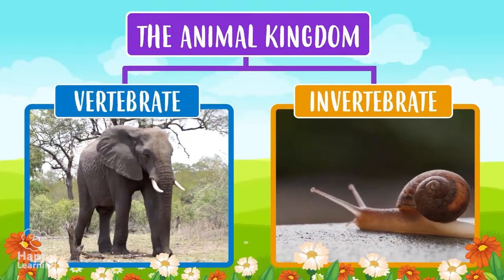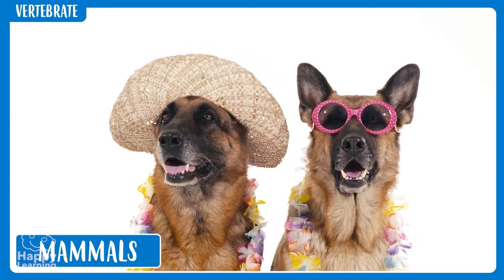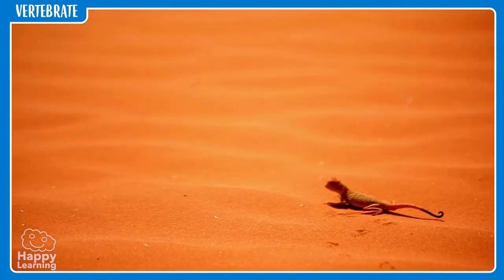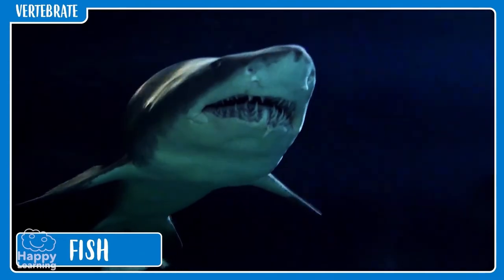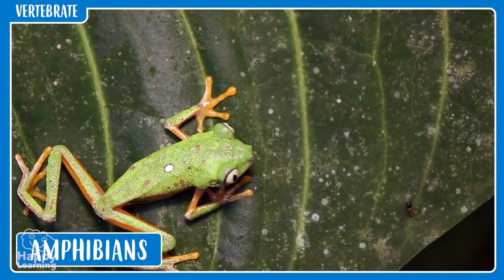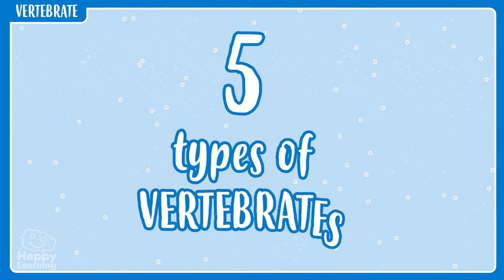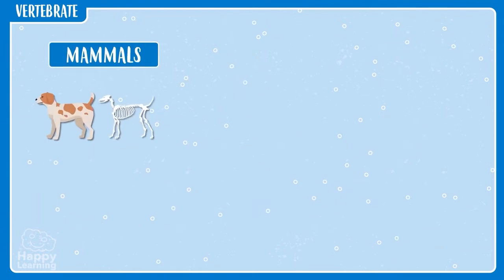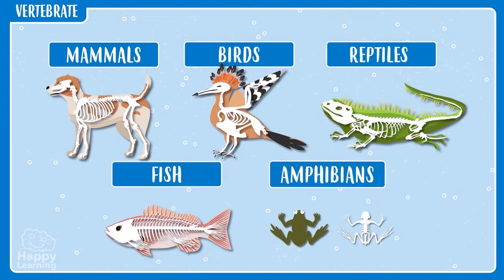Within the group of vertebrate animals are mammals, like these funny dogs; birds, like our friend the parrot; reptiles, like this gecko, which is a kind of lizard; fish, like this fearsome shark; and amphibians, like this little jumping frog. Remember, there are five types of vertebrates: mammals, birds, reptiles, fish, and amphibians.